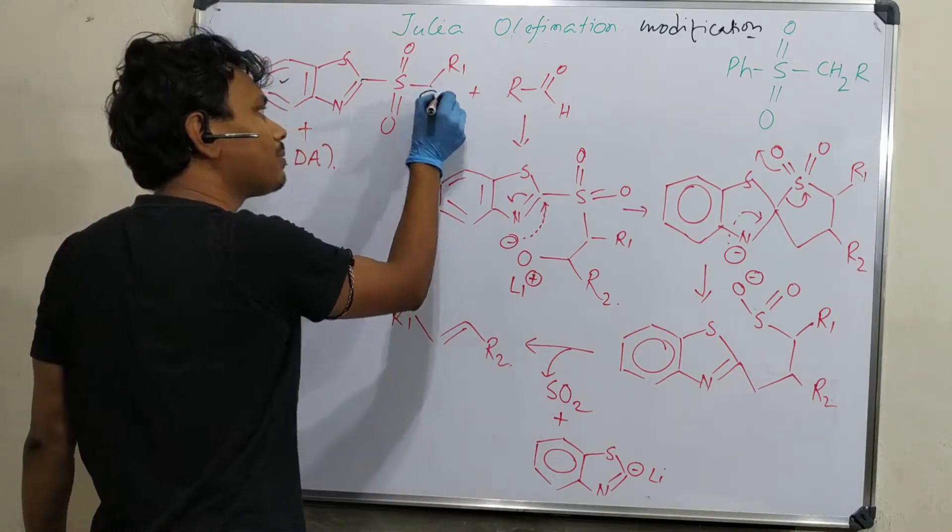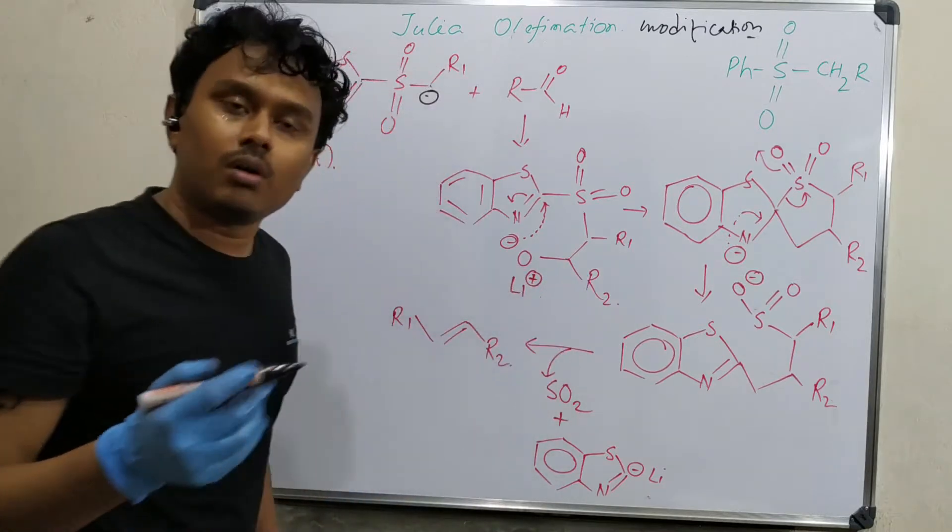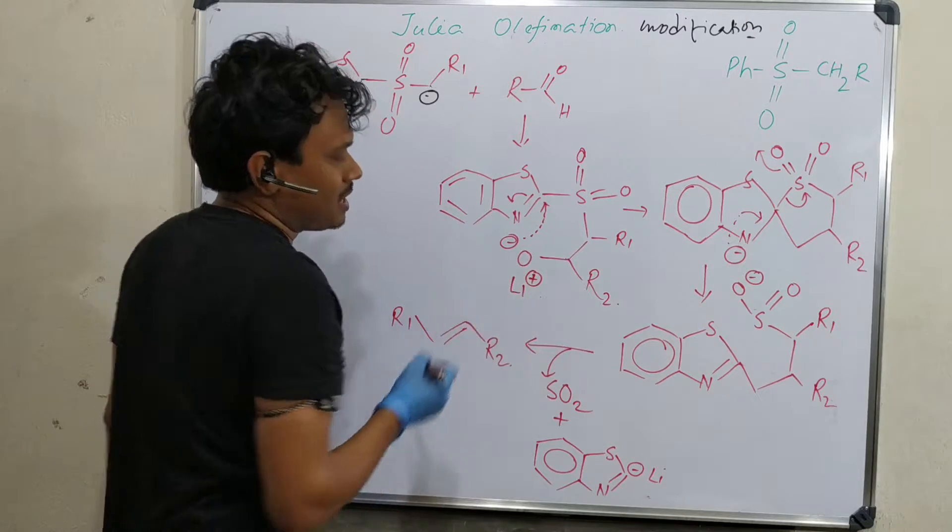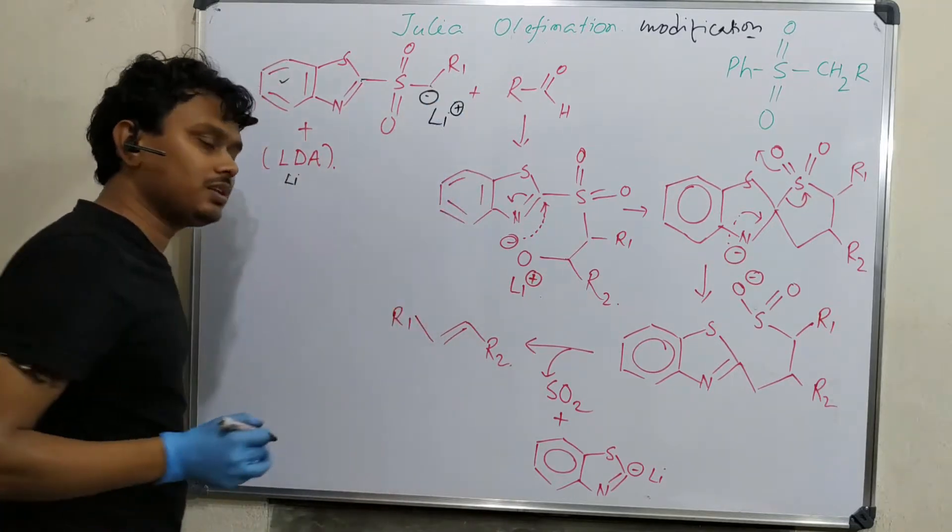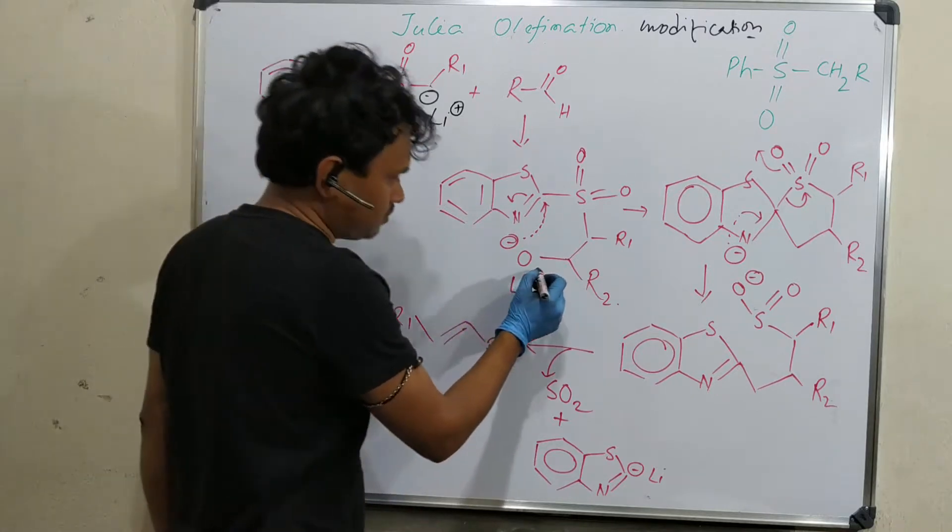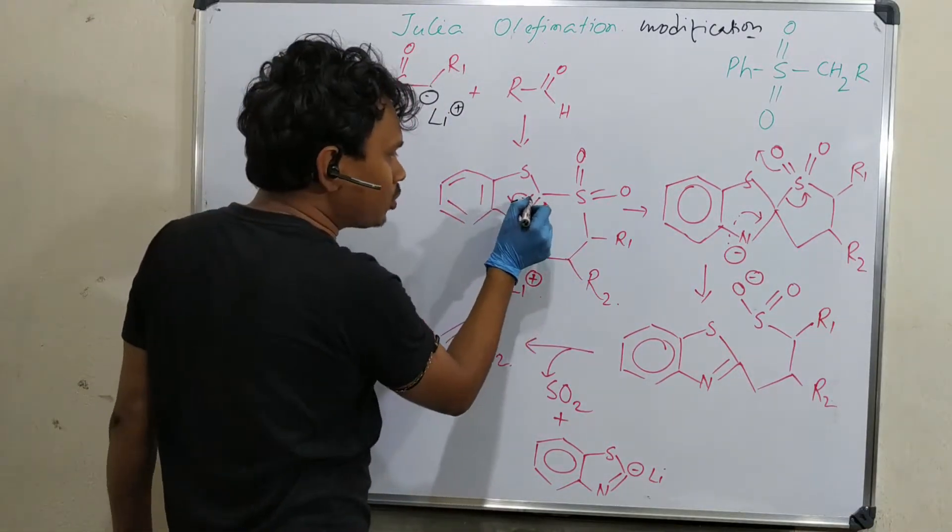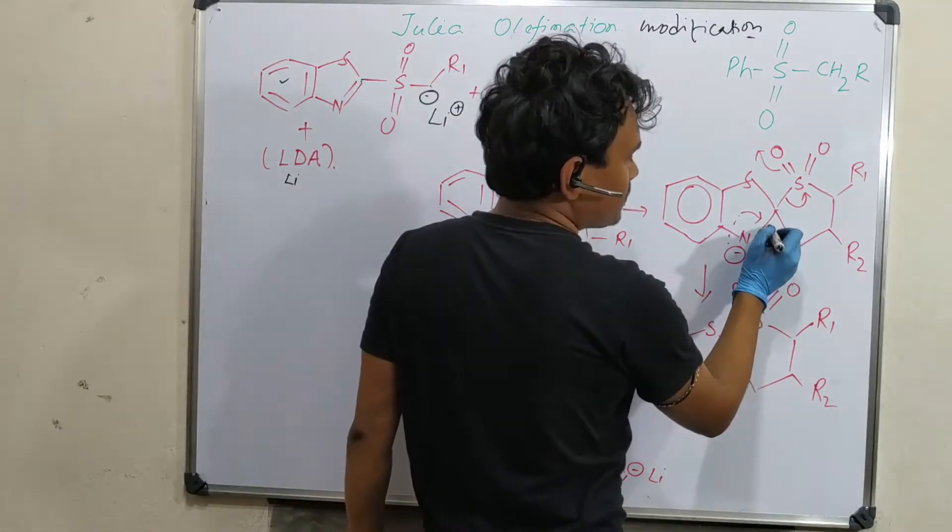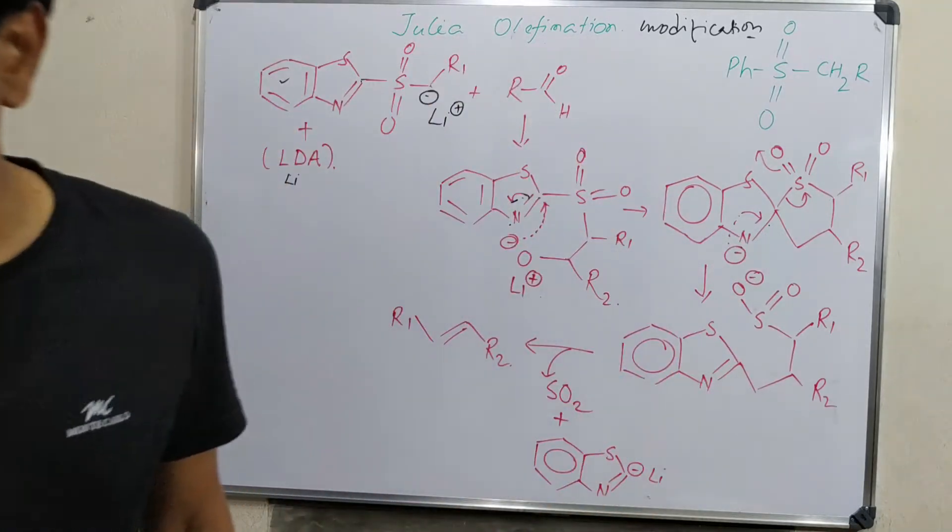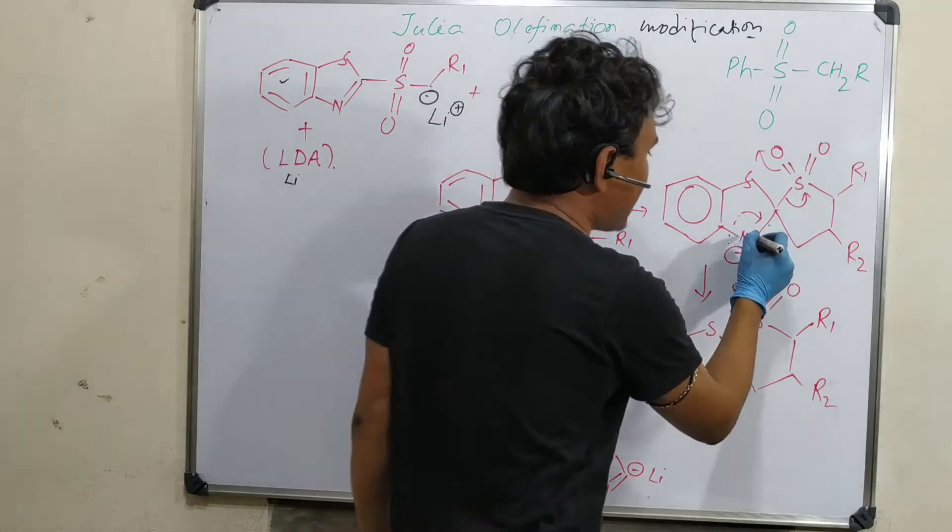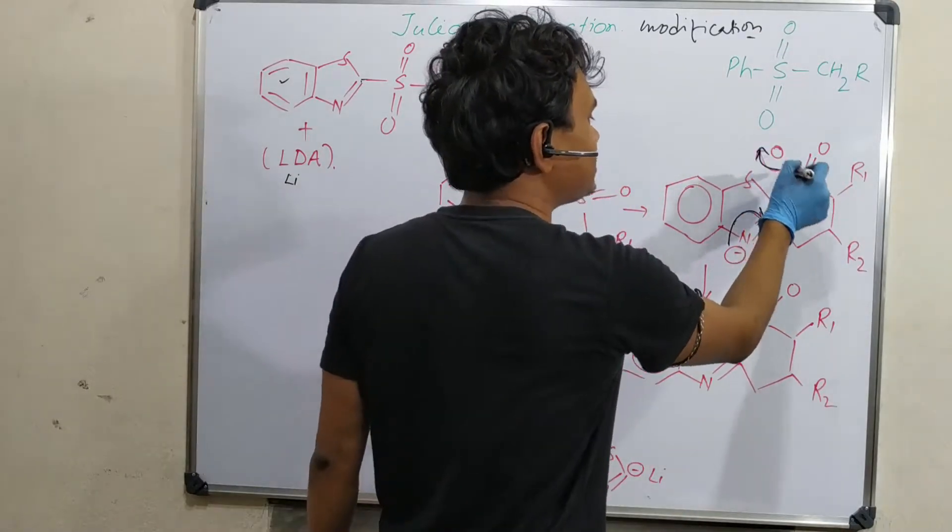Since we have used LDA, lithium will be there. Lithium is very good for coordination or bond formation with oxygen because of similar size. Consequently, this attacks here. This bond opens up. You can see the negative charge comes on nitrogen after this nucleophilic attack. Nitrogen is now electron-rich. This nitrogen pushes back its electron and this bond is opened. This is a reduction at the sulfur center.